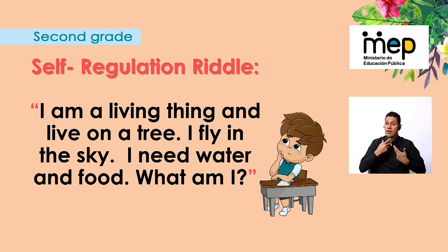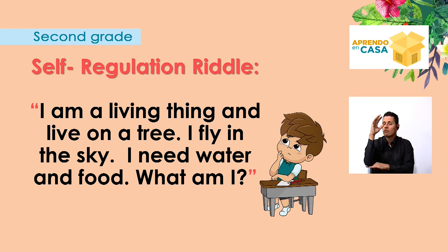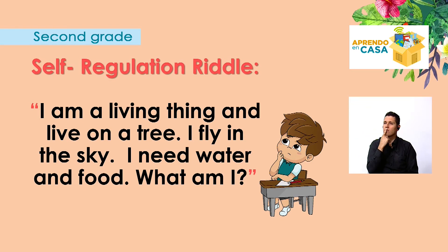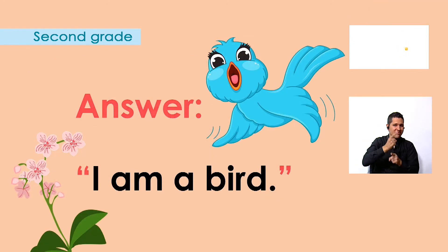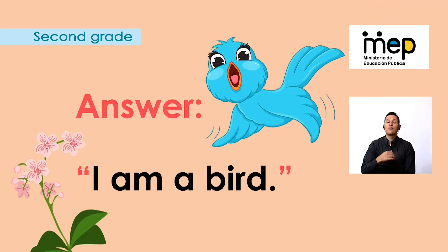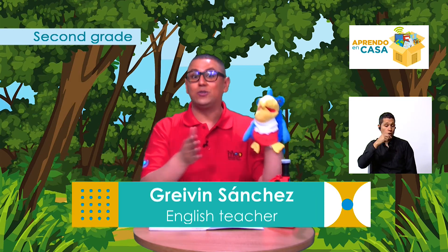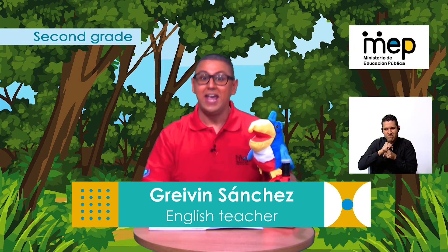What about the answer for the riddle? I want to know the answer! Remember: I am a living thing and live on a tree. I fly in the sky. I need water and food. What am I? A bird — correct! I am a bird, just like you Maria! Remember to see you next week at 8:30 on channel 4. Don't forget to wash your hands, practice, take notes, and wear a face mask. Hope to see you next week — thank you for paying attention, you are great students!